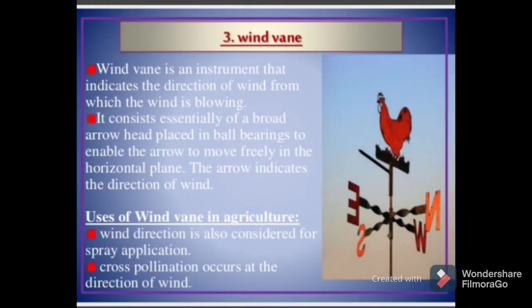Wind vane is an instrument that indicates the direction from which the wind is blowing. It consists essentially of a broad arrowhead placed in ball bearings to enable the arrow to move freely in the horizontal plane. Uses of wind vane in agriculture: wind direction is also considered for spray application, and cross-pollination occurs at the direction of wind.